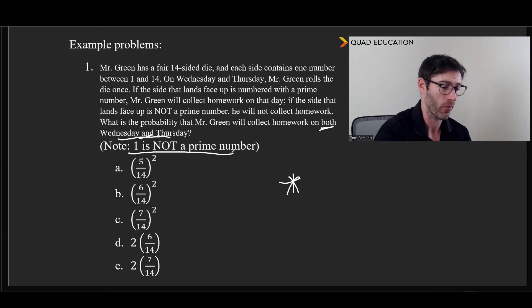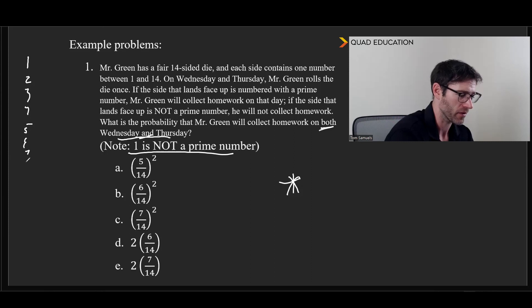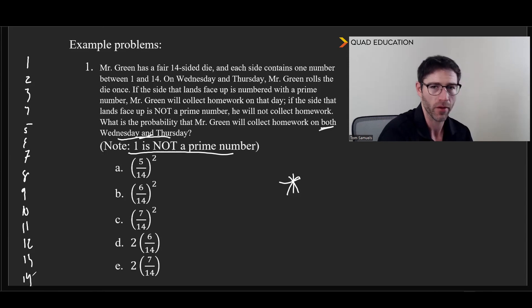So anyway, we basically want to count from the numbers 1 to 14 - 1, 2, 3, 4, 5, 6, 7, 8, 9, 10, 11, 12, 13, and 14 - and decide how many of those are prime.